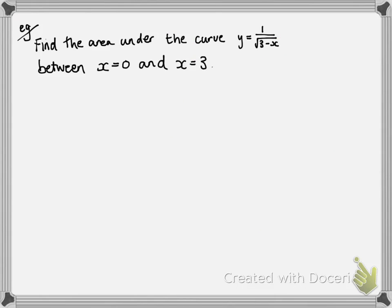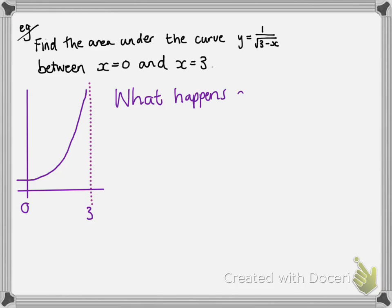Okay, here's another example. You're being asked to find the area under this curve between 0 and 3, so your first thing would be to sketch it. So here we have what the curve looks like and we actually get an asymptote at 3 and we're looking for that area under there. So we're going to consider what happens as we get close to that 3.